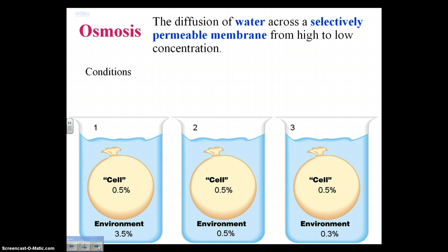Write down the definition of osmosis, taking extra note that osmosis is really working with a special class of diffusion — working with water specifically and requiring the presence of a selectively permeable membrane.